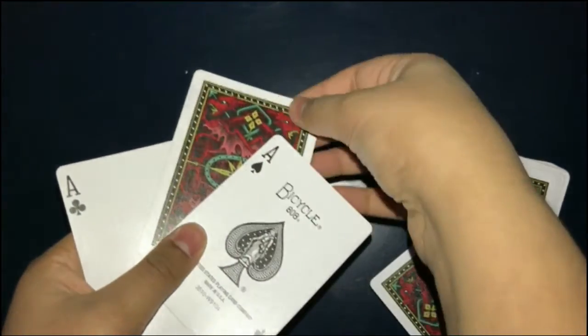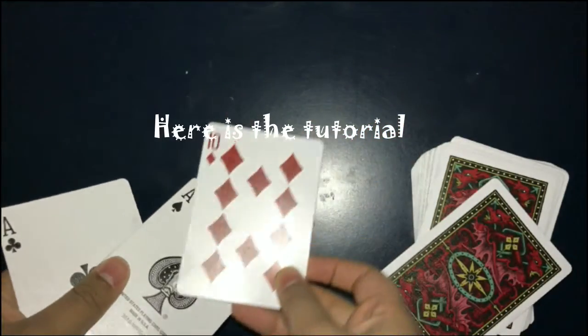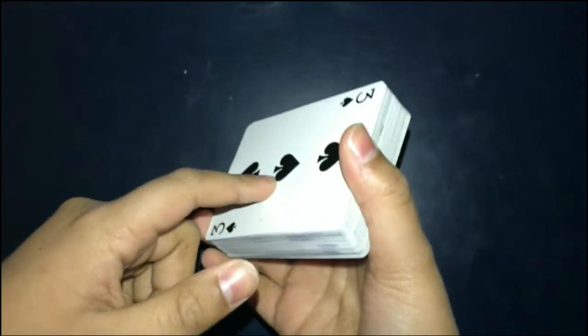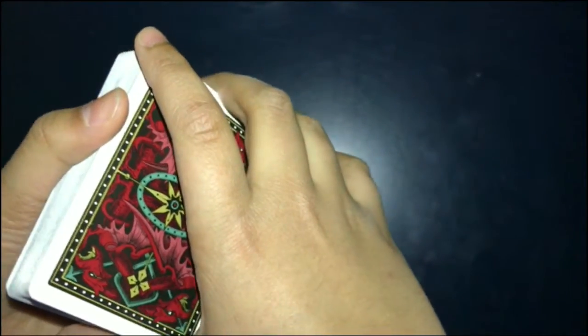Tutorial: The trick mainly uses one thing, a key card. So to start out, you need to know what the bottom card is. There's a few different ways of doing this. One way is to simply look at the card before you start the trick. A different way to do this...